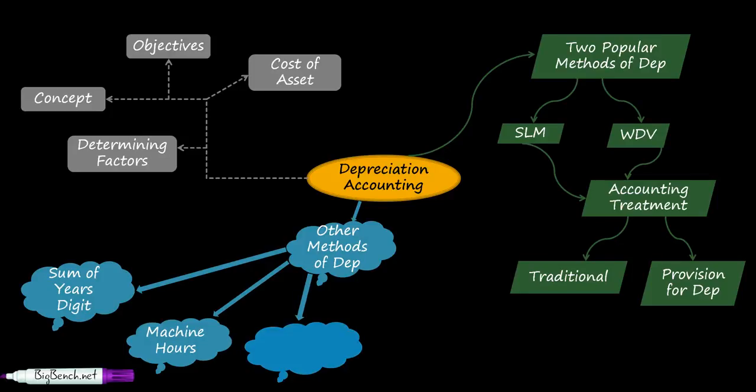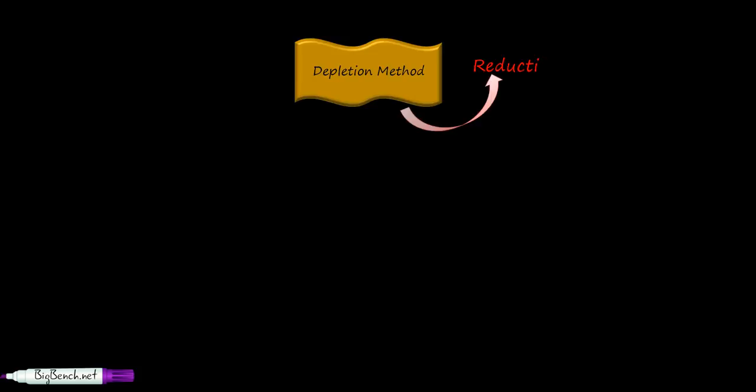The next method of depreciation is the depletion method. Depletion means reduction in quantity of the asset itself. There is a difference between wear and tear of an asset and depletion. If you remember the example of an air conditioner where I showed you a brand new AC and an AC which was used after a few years, there was wear and tear of that AC, whereas depletion means there is actual reduction in the quantity of asset itself.